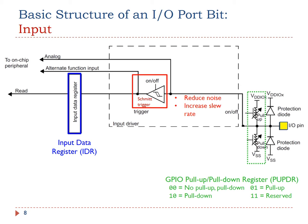The input module includes one important electronic component called the Schmidt trigger. The Schmidt trigger circuit is a special voltage comparator. It has two functions. First, it reduces noise and provides a cleaner and more reliable signal. Second, it converts a slow signal edge into a clean edge with instantaneous transition. Thus, it can increase the slew rate of signals.